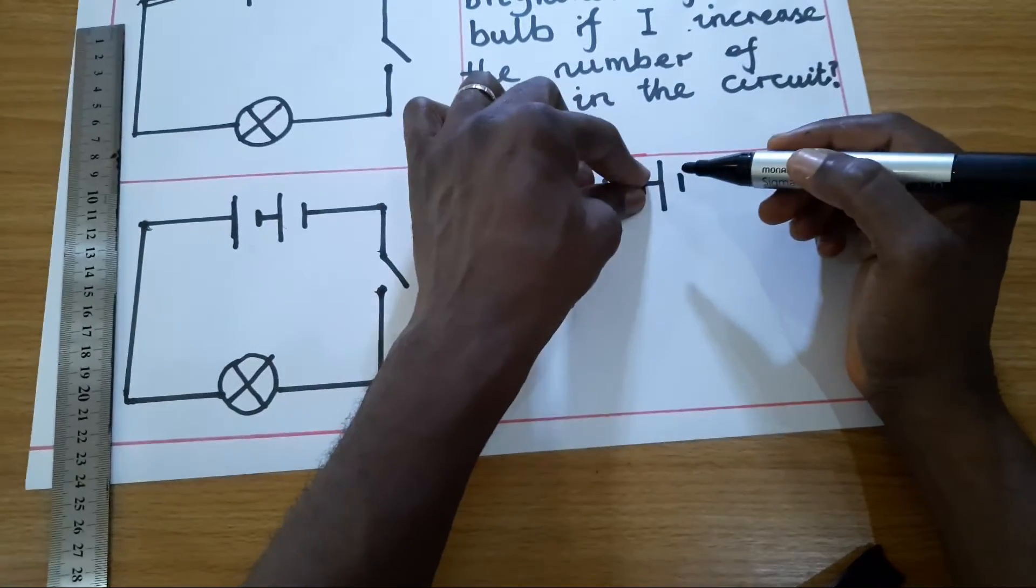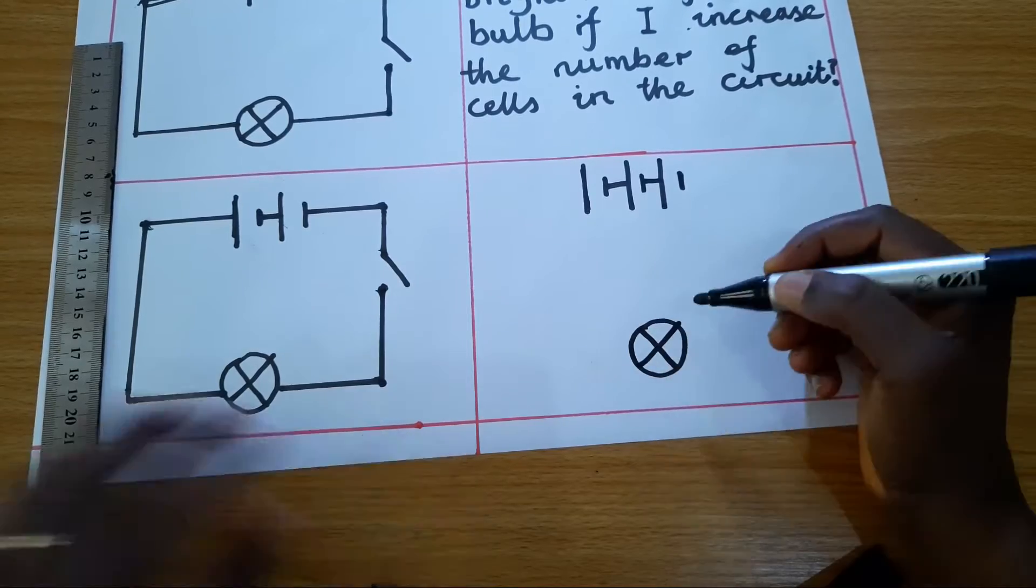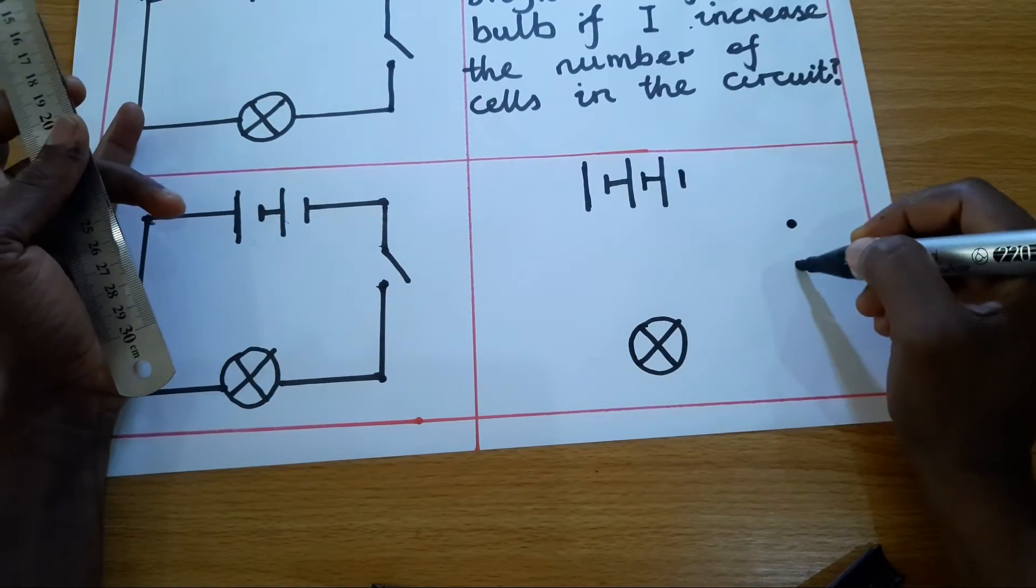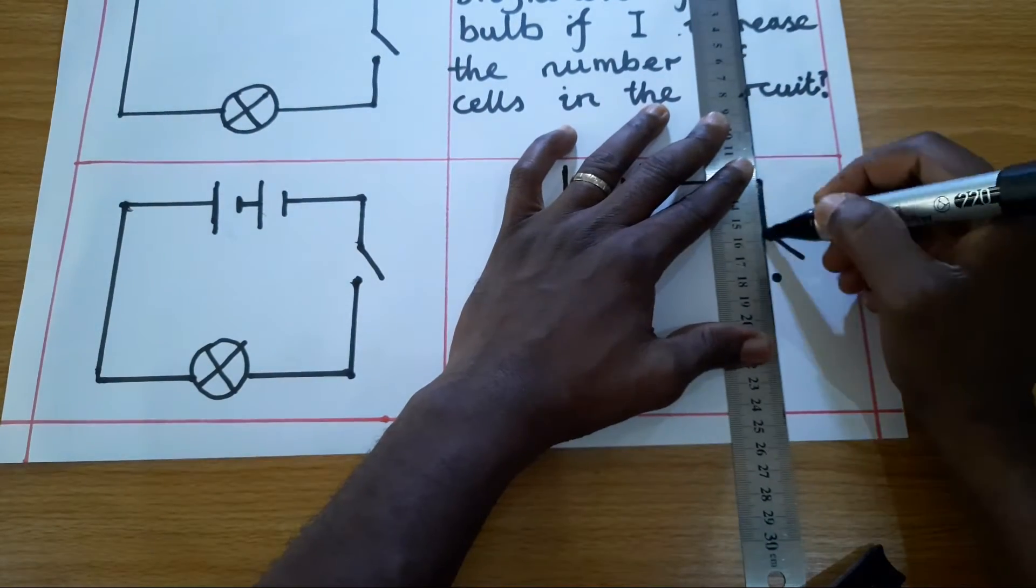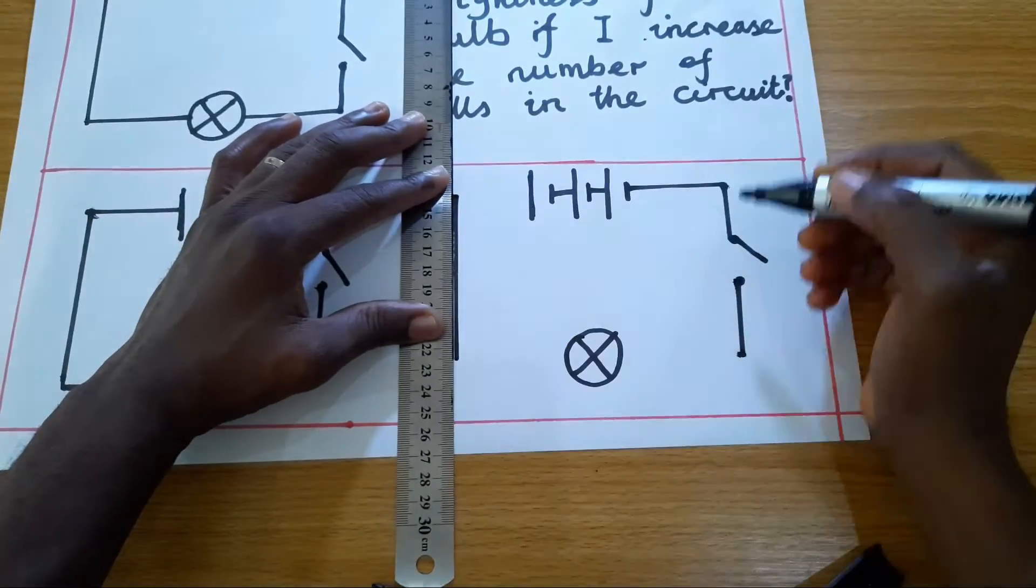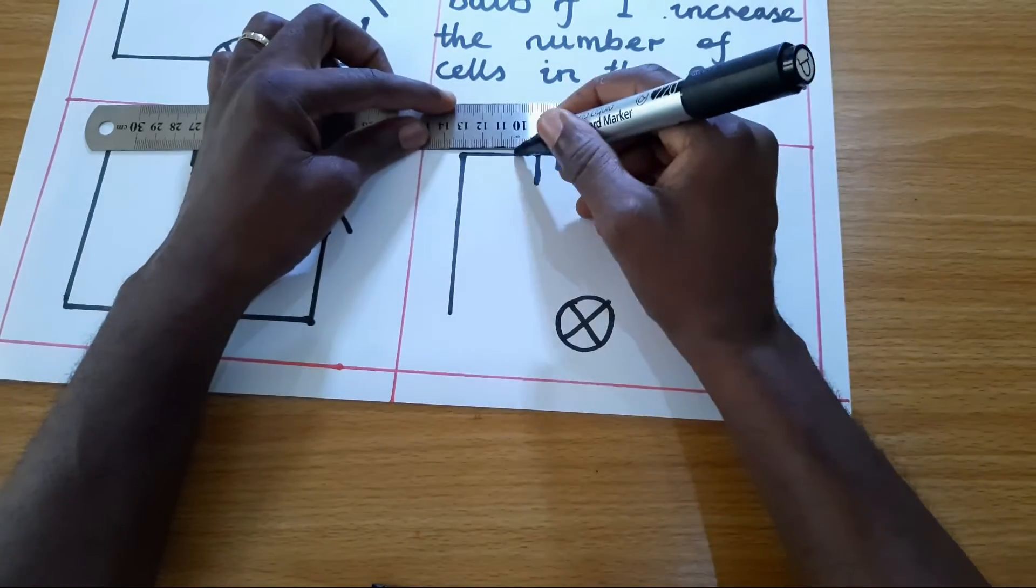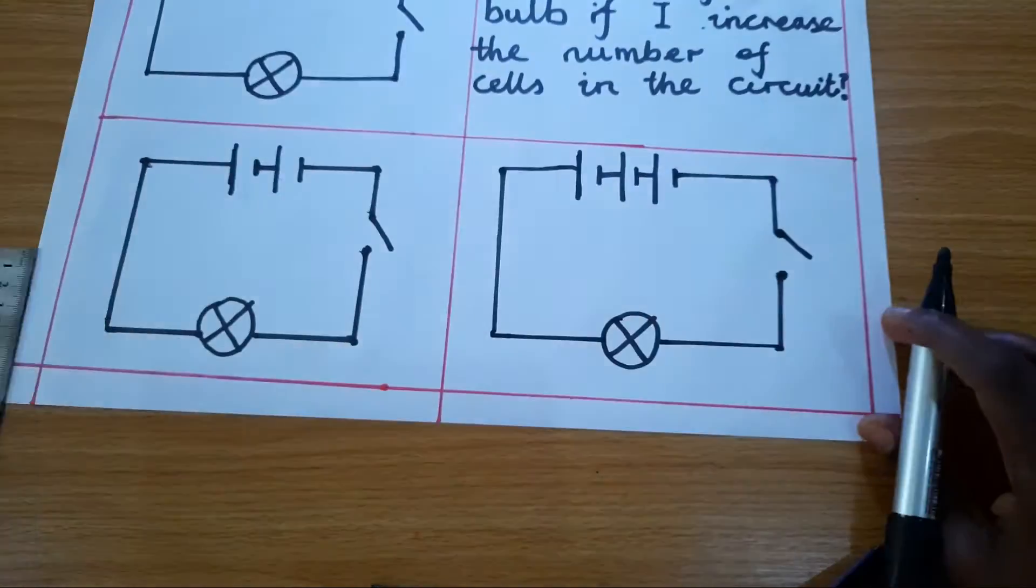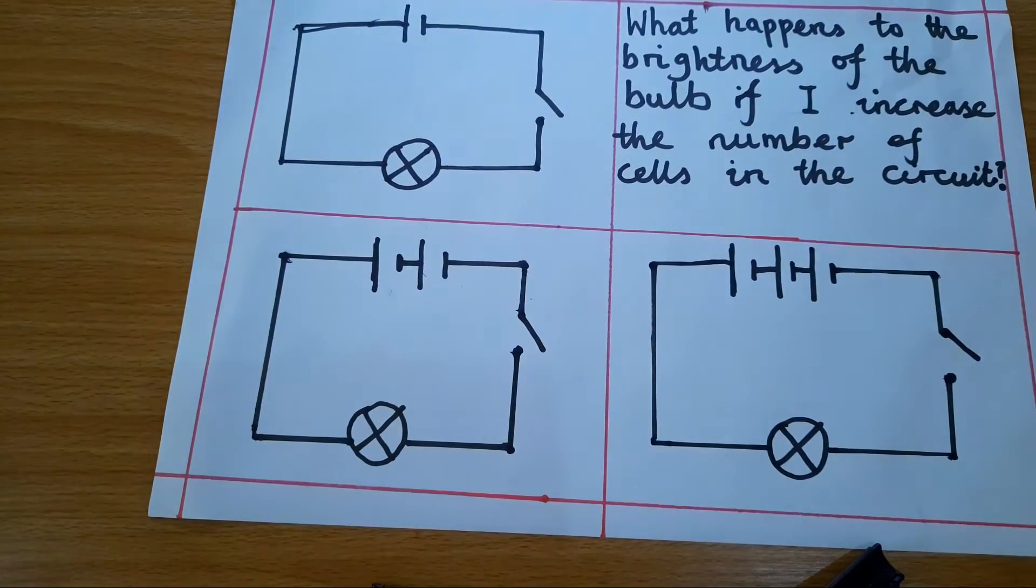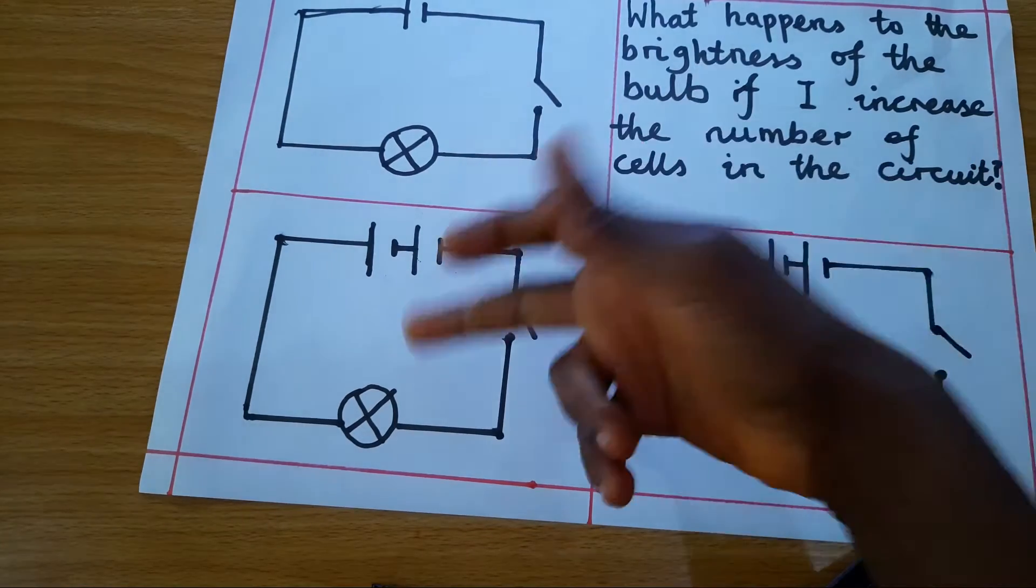So I can say one cell, another cell, then the last one. So, one cell, one bulb, two cells, one bulb, three cells, one bulb. So we can say battery, battery, cell.